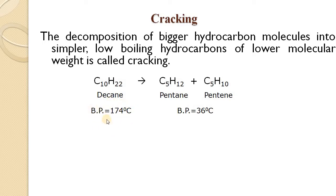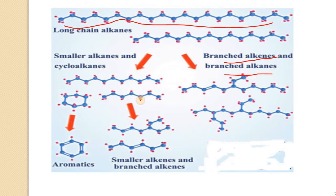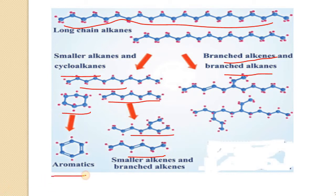So decane is a 174 degree centigrade, high boiling point, heavy molecular weight hydrocarbon converted into simpler hydrocarbons. You can see how these long chain hydrocarbons containing carbon and hydrogen are broken into smaller alkanes, branched alkanes, and cycloalkanes, which break up further into simpler alkanes, branched alkanes, and aromatics. You can obtain different fractions of hydrocarbons by this cracking method.